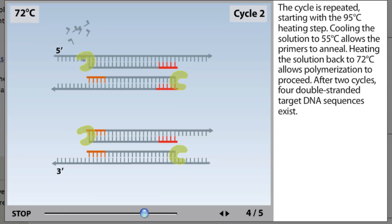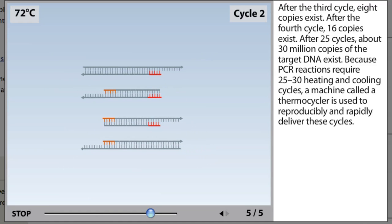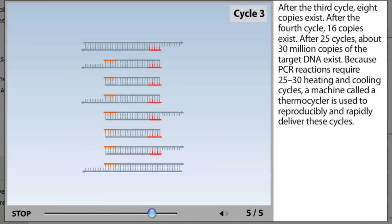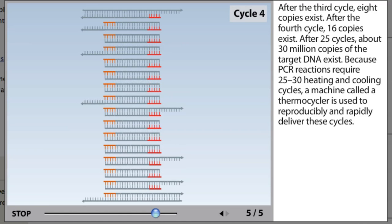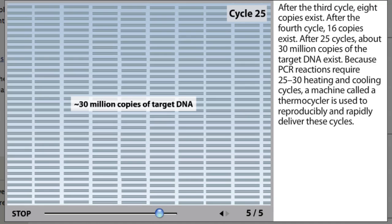After two cycles, four double-stranded target DNA sequences exist. After the third cycle, eight copies exist. After the fourth cycle, 16 copies exist. After 25 cycles, about 30 million copies of the target DNA exist.